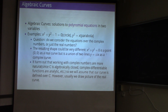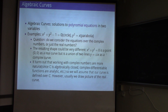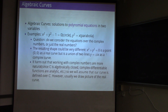It turns out that working with complex numbers is more natural in the setting of algebraic curves because complex numbers behave much better than real numbers. For example, ℂ is algebraically closed — every non-constant polynomial over complex numbers has at least one root. Also, complex differentiable functions are holomorphic functions, and they are complex analytic. Unlike real functions, if a complex function is once differentiable, it's infinitely differentiable and analytic. Throughout the whole study, we assume that our curve is defined over ℂ, so we look at the complex solutions.